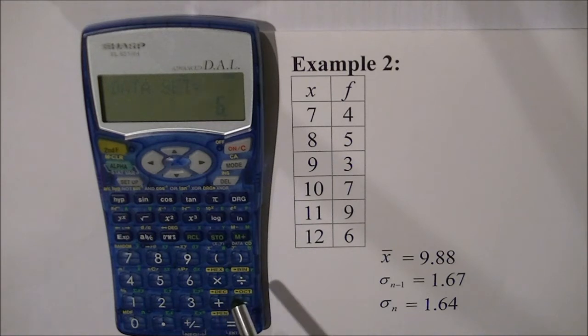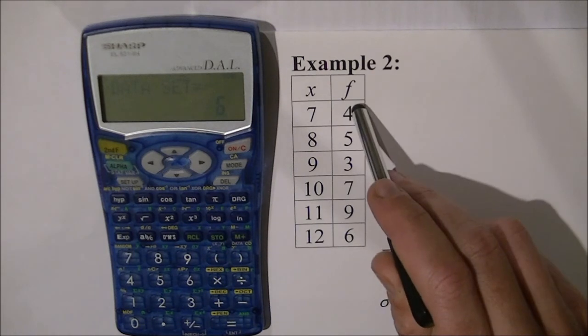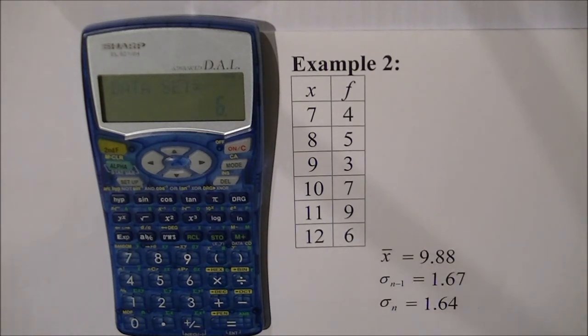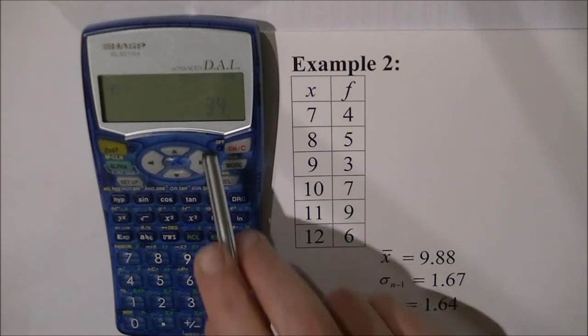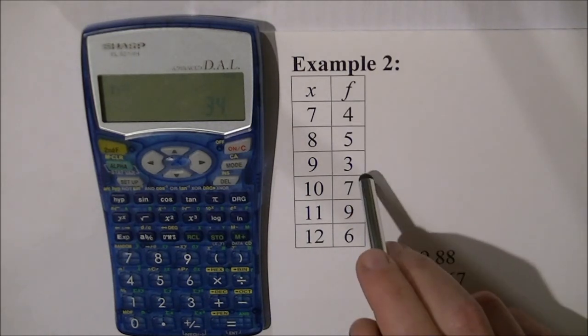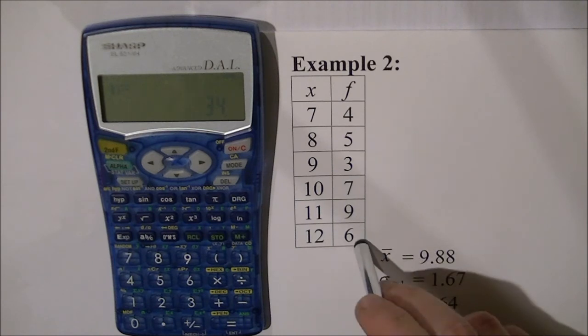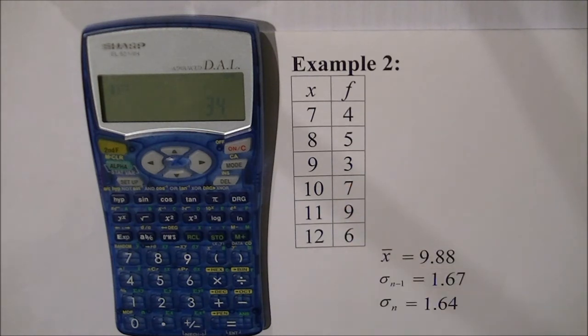Now just to show you that we have actually entered more than six numbers we've actually entered into the calculator many more numbers. I'm going to show you down here on the zero key above the zero key you see the little letter N. If I go alpha zero it will tell me how many numbers are actually in the memory and it tells me that there are actually 34 numbers in the memory which is four plus five is nine plus three is 12, 19, 28, 34 so there's the 34 scores I've put in.